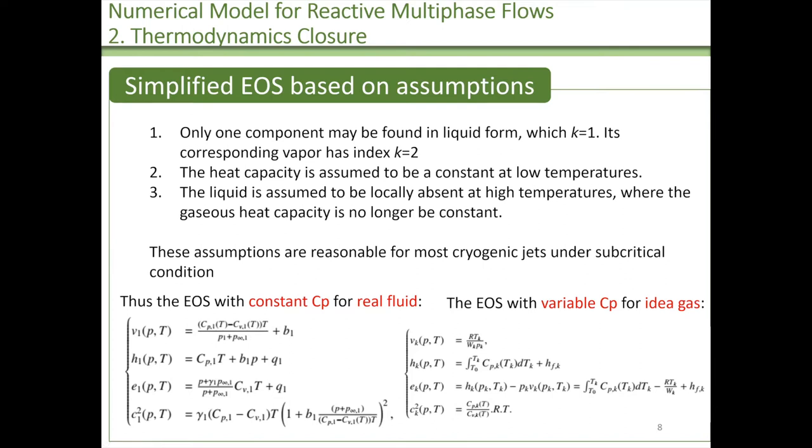We assume, first, only one component may be found in liquid form. We indicate as K1 and its corresponding vapor as K2. The second assumption is the heat capacity is assumed to be constant at low temperature. And the third assumption is the liquid is assumed to be locally absent at high temperature where the gas heat capacity is no longer constant. These assumptions are reasonable for most cryogenic jet under some subcritical condition. So based on this assumption, the EOS with the constant Cp for real fluid has this formulation, and the EOS with variable Cp for ideal reactive gas has this formulation.